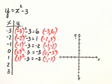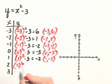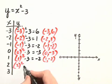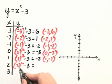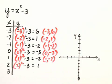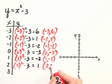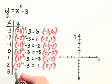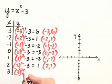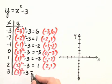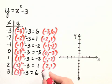Next, we substitute 2. We have 2 squared minus 3, which gives us 4 minus 3, or 1. So we have the point 2, 1. And finally, we have 3 for x. So we substitute in 3 and square it, minus 3 gives us 9 minus 3, or 6. So we have the point 3, 6.